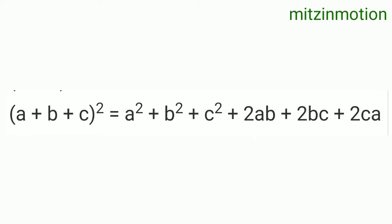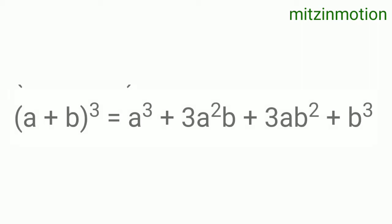(a + b + c)² = a² + b² + c² + 2ab + 2bc + 2ca. Next formula: (a + b)³ = a³...